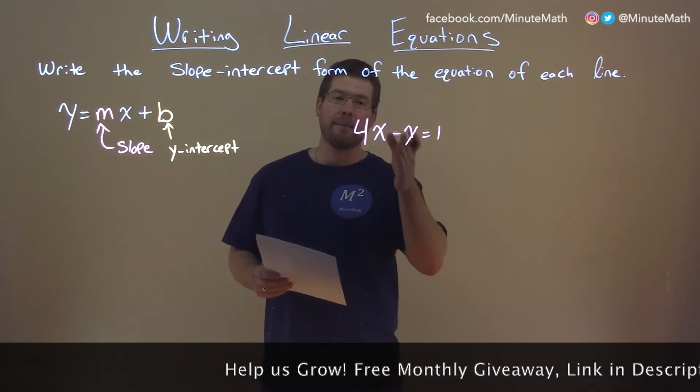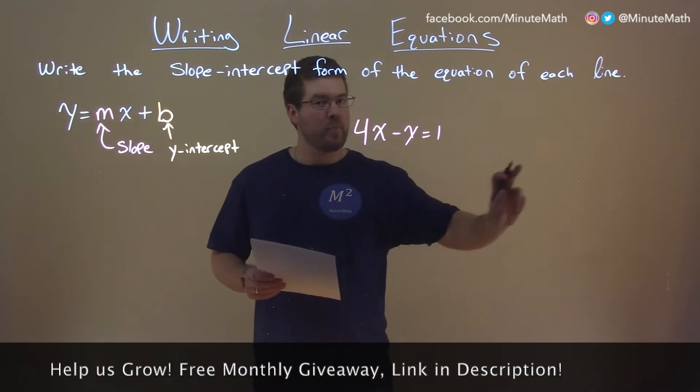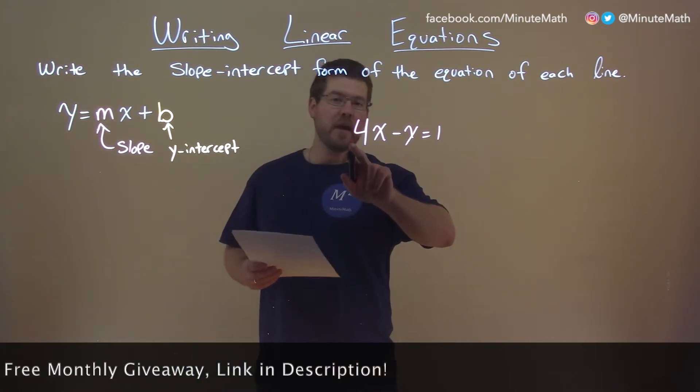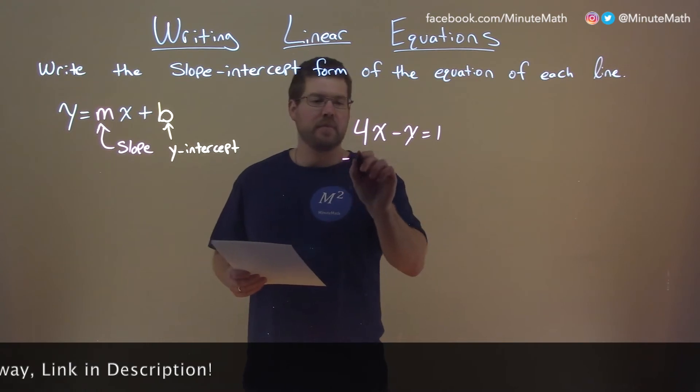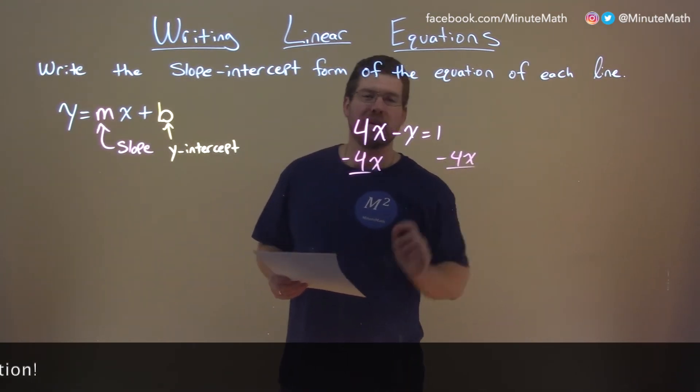Goal here: get y by itself. First step to do that, we have a 4x here, let's bring it to the other side. Positive 4x, opposite of positive is negative, so addition, opposite of that, subtraction. Subtract the 4x here, and do that to both sides of the equation.